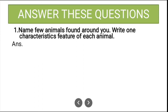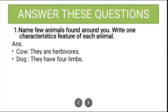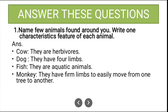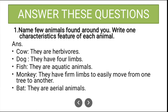Now for long answers. First: Name a few animals found around you and write one characteristic feature of each. For example — cow: they are herbivores; dog: they have four limbs; fish: they are aquatic animals; monkey: they have four firm limbs to easily move from tree to tree; bat: they are aerial animals.